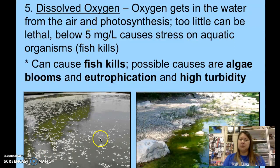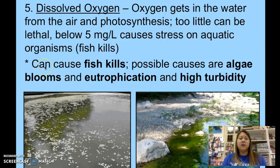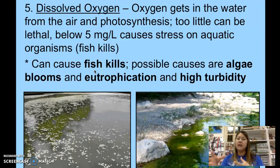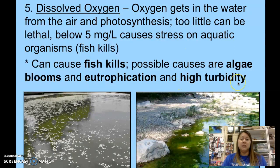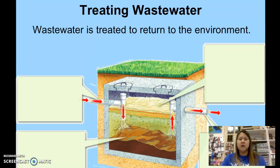Low dissolved oxygen levels lead to a fish kill — as seen in the earlier picture — causing organisms to suffocate. Low dissolved oxygen can also be attributed to algae blooms and eutrophication: starting with a lake having a little algae, then much more algae filling in, until eventually the lake dies and becomes filled with grass and plants. High turbidity can also cause dissolved oxygen levels to drop too low.